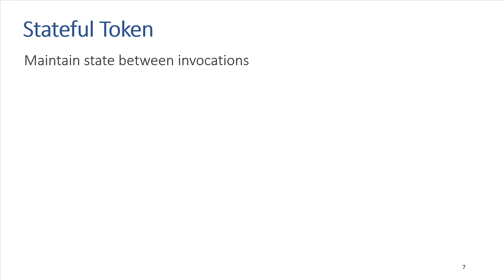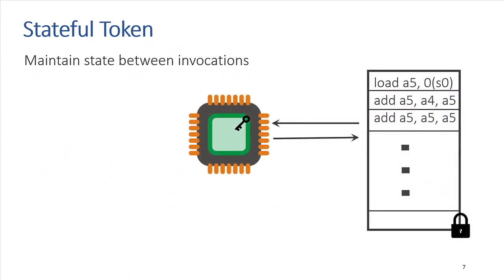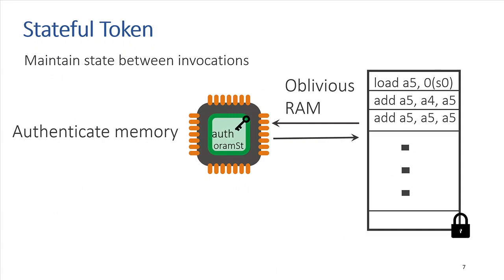With a stateful token — one that maintains state between invocations — the token reads one instruction at a time, executes it, and writes the output back. To protect memory access patterns, you employ an oblivious RAM and store the ORAM state inside the token. To prevent the adversary from mixing executions, you authenticate memory and store authentication state in the token. You also run the program for a fixed time for all inputs so the adversary cannot distinguish program behavior across inputs. This gives a secure obfuscation scheme with a stateful token.